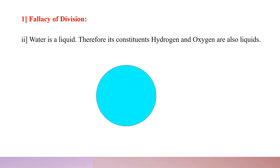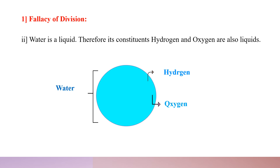A second example: water is a liquid, therefore its constituents hydrogen and oxygen are also liquids. Here it is wrongly argued that what is true of water as a whole — that it is a liquid — is said to be true of its constituent parts, hydrogen and oxygen, separately.